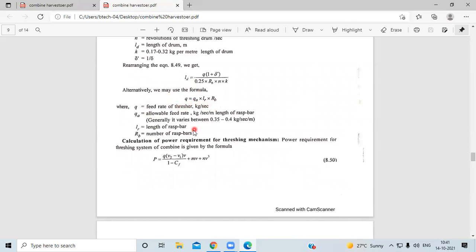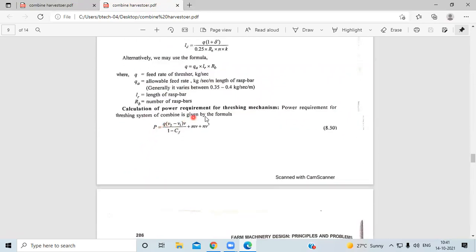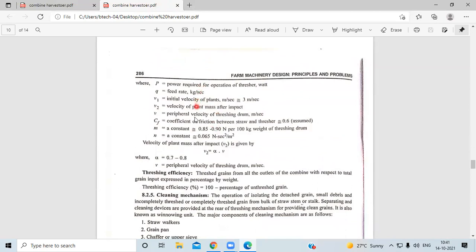Q equals KL times R times RB. Next is the calculation of power requirement. E equals Q times V2 minus V1 upon V1 plus CF plus NV times NV cubed. These are the particulars.